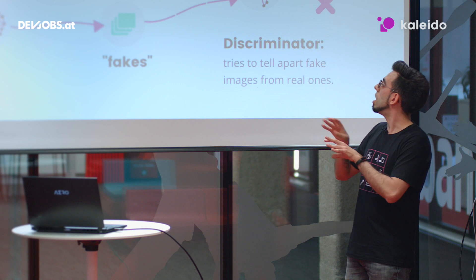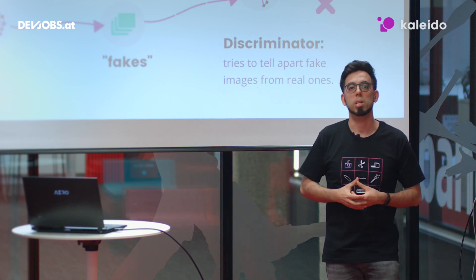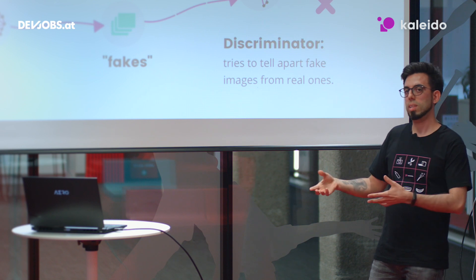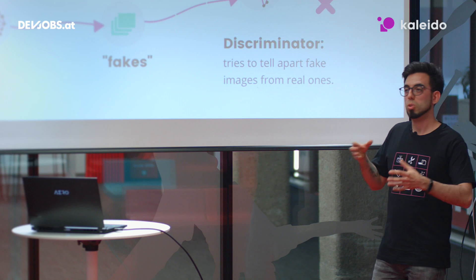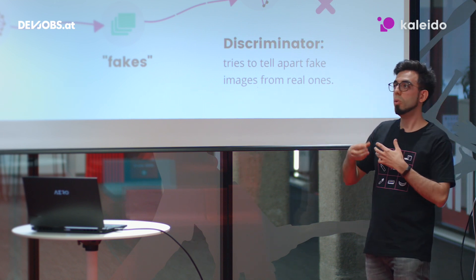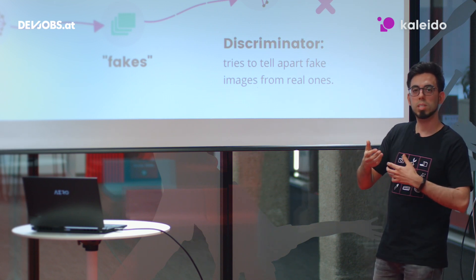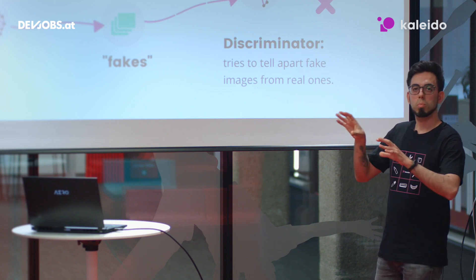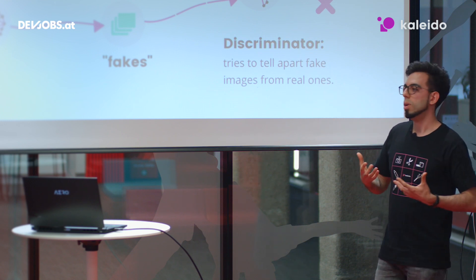These shuffled images are fed into a second network called the discriminator, whose job is to tell apart the fake images made by the generator from the real images. We train both networks simultaneously in a competition: as one gets better, the other gets feedback on what it needs to do to improve. The generator gets better at faking, the discriminator gets better at detecting, and through this game we end up with a generator that's able to produce convincing real-looking images.